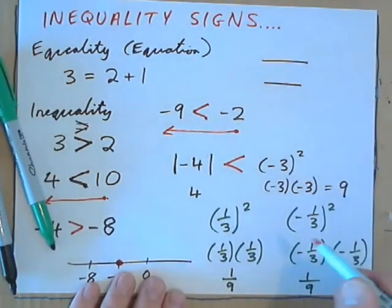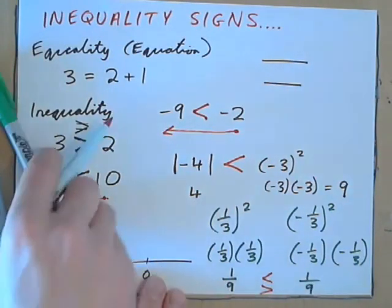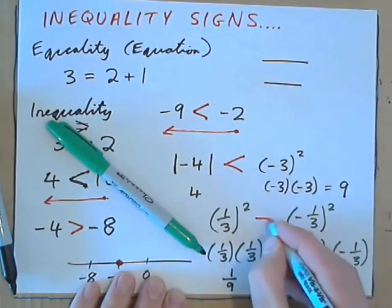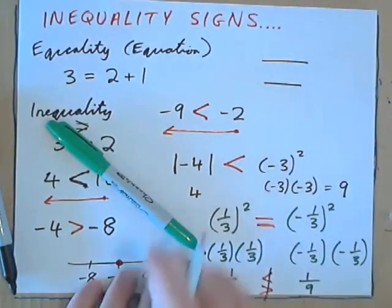So, how do we put the inequality sign? Do we put it in this direction? Or like that? Which way? Well, the answer is we don't use either of those. Because this quantity is equal to this. So, we put an equal sign. This is the same as this. Okay?